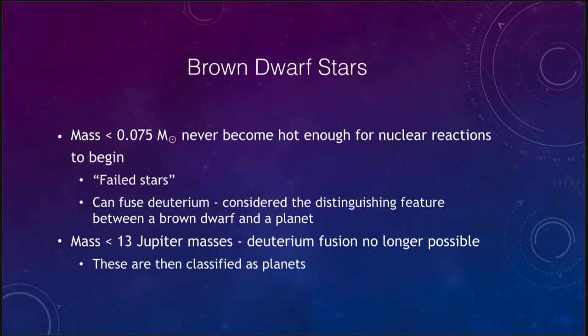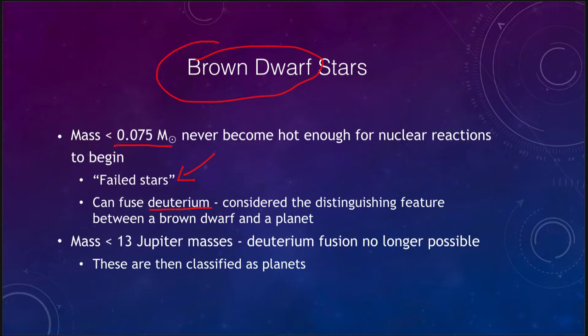So what is a brown dwarf star? Stars with a mass less than 0.075 solar masses never become hot enough to fuse hydrogen to helium in their core — these are what we call failed stars or brown dwarf stars. They can fuse deuterium, which is an isotope of hydrogen with one proton and one neutron in its nucleus. This is the distinguishing factor between a brown dwarf and a planet: a star fuses hydrogen into helium, a brown dwarf can fuse deuterium, and a planet is unable to fuse deuterium.